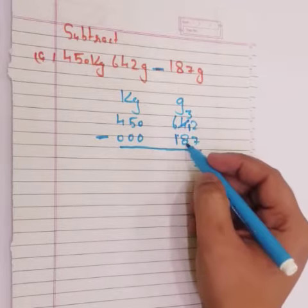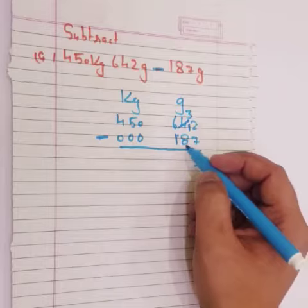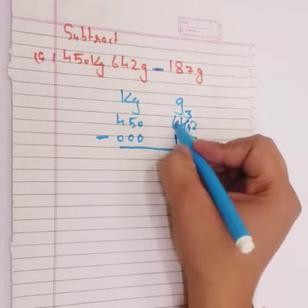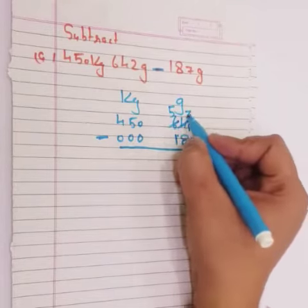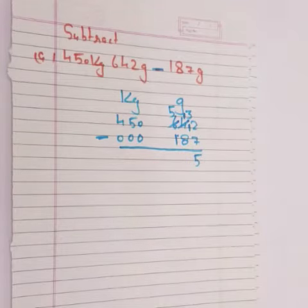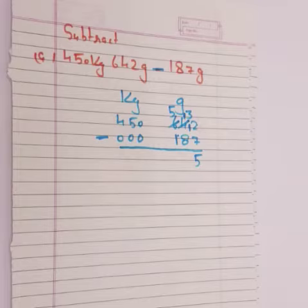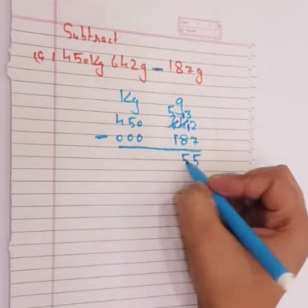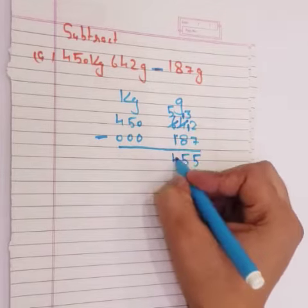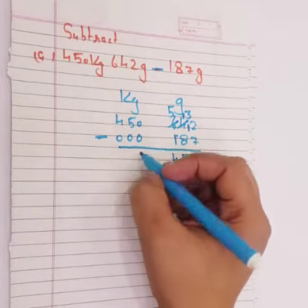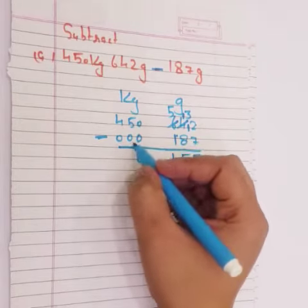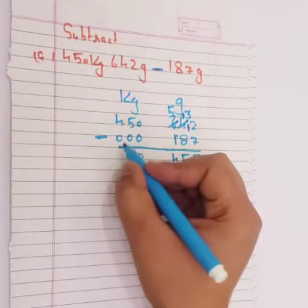Yarni gya 3 hai. 3 mein se less karna hai 8. 3 mein se 8 less nahi ho saktah. Hym 6 mein se 1 borrow karenge. Yarni gya 6 kia 5. Yarni gya 13. 13 count karenge 1, 2, 3, 4, 5, 6, 7, 8, 9, 10, 11, 12, 13. Less karna 8: 1, 2, 3, 4, 5, 6, 7, 8. Cut kar diya answer 1, 2, 3, 4, 5. 5 mein se 1 less karenge 4. 0 mein se 0 gaya 0. 5 mein se 0 gaya 5. 4 mein se 0 gaya 4.